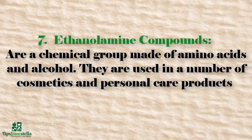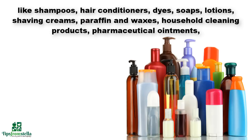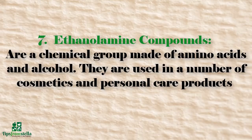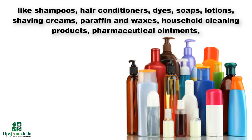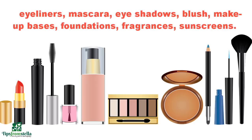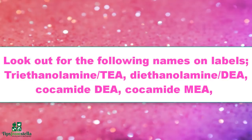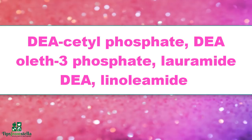Number seven: ethanolamine compounds. These are a chemical group made of amino acids and alcohol, used in cosmetics and personal care products like shampoos, hair conditioners, dyes, soaps, lotions, shaving creams, paraffin waxes, household cleaning products, eyeliners, mascara, eyeshadows, blush, makeup bases, foundations, fragrances, and sunscreens. They are linked to liver tumors and have been banned in Europe. Look out for triethanolamine (TEA) and diethanolamine (DEA) on labels.